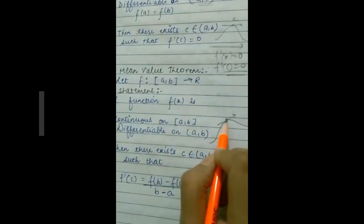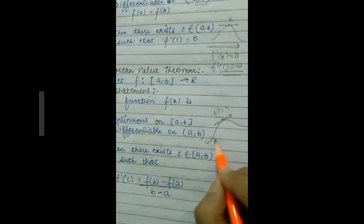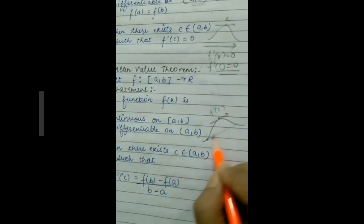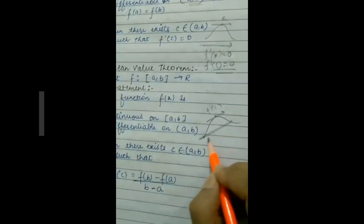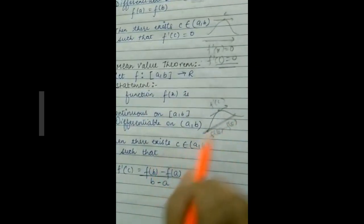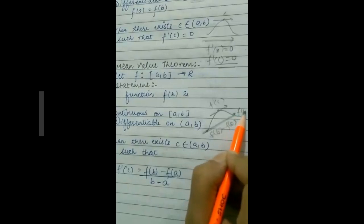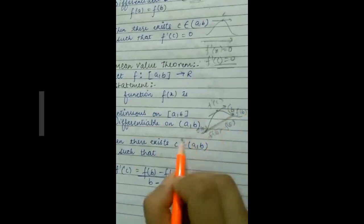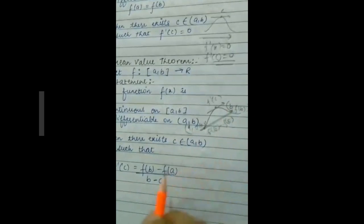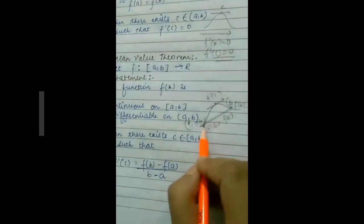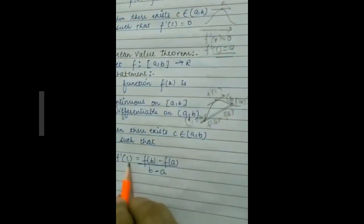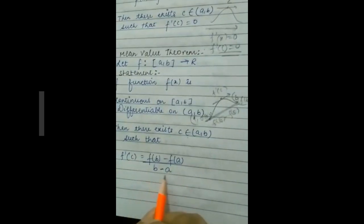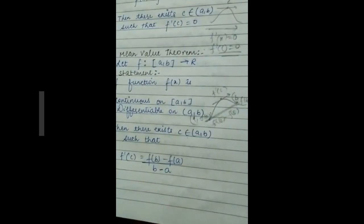Geometrically, f'(c) represents the slope of the tangent at point c on the curve, and f(b) − f(a) / (b − a) gives the slope of the secant AB — where this point is (b, f(b)) and this point is (a, f(a)). So f'(c) equals the slope of the secant AB, and both slopes must be equal.